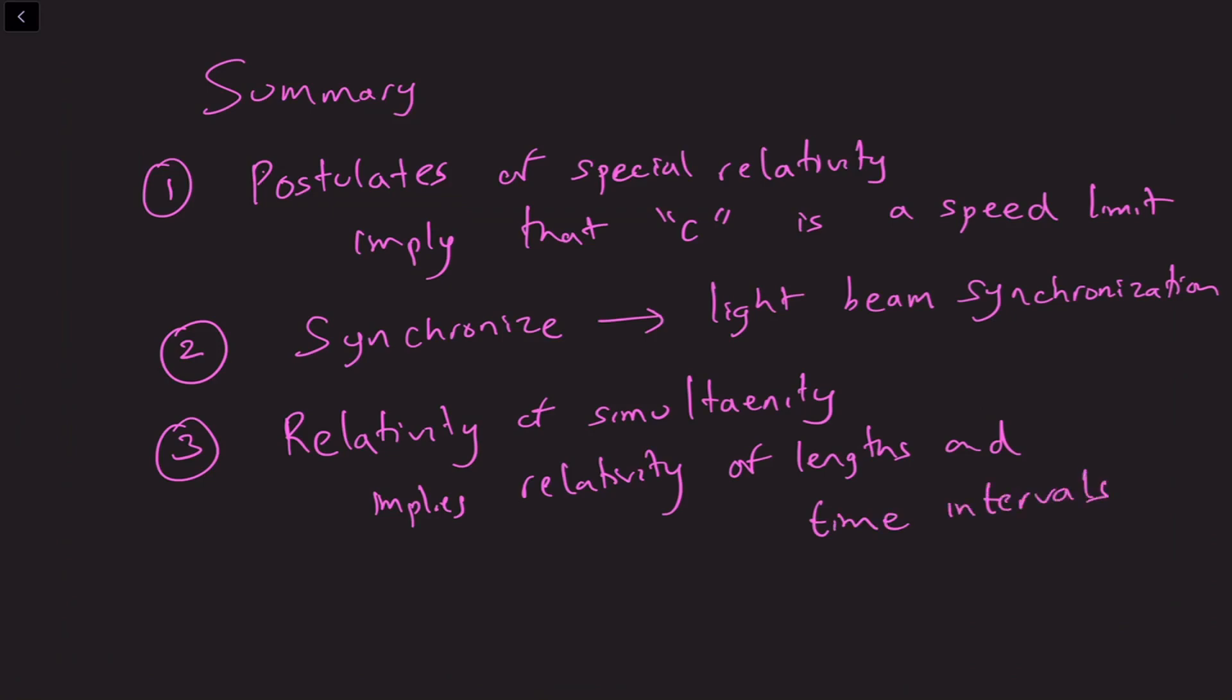And these three things - the relativity of simultaneity, the relativity of lengths, and the relativity of time intervals - are something that you do not expect at all from the point of view of Galilean relativity. It is only something that comes up from special relativity and therefore all of this is flowing from the postulate that the speed of light is constant for all inertial observers. Every single inertial observer will measure the same speed of light in their own reference frame.